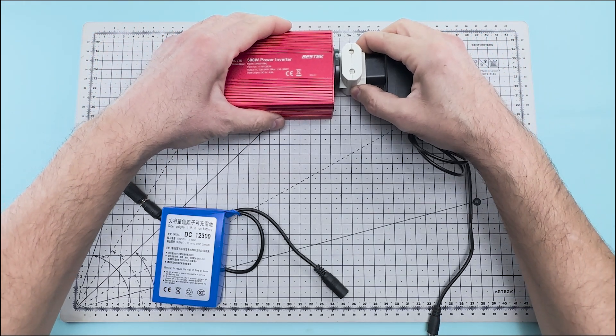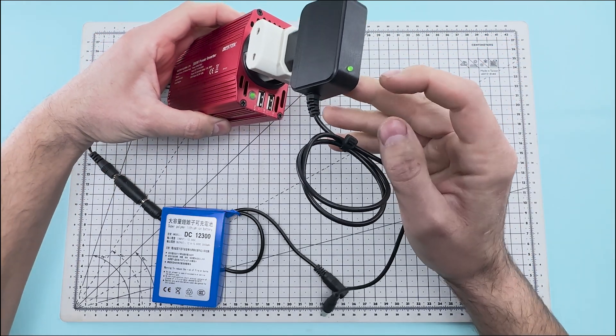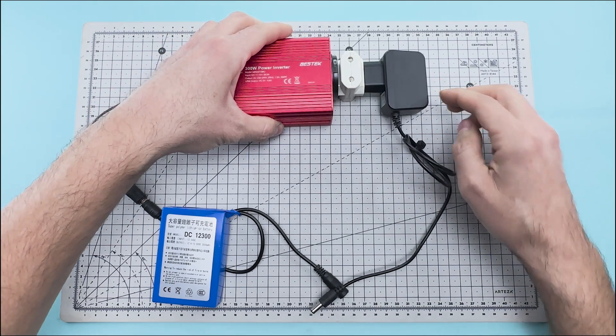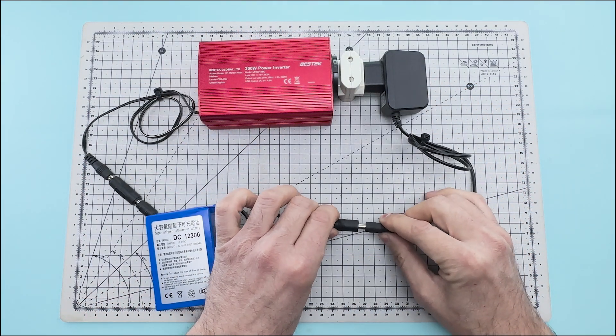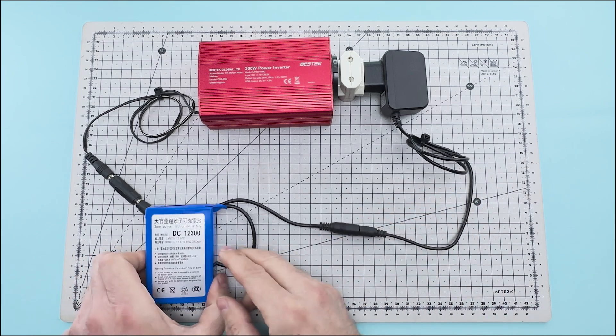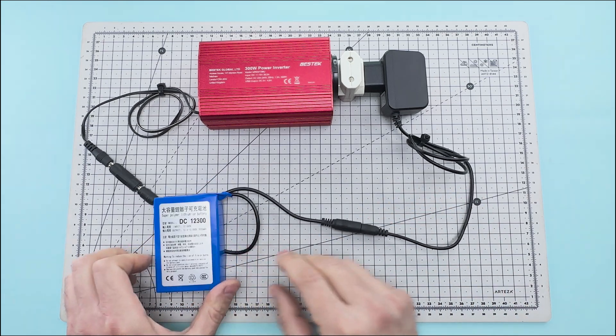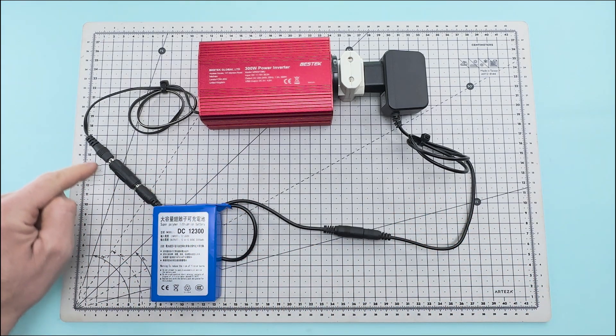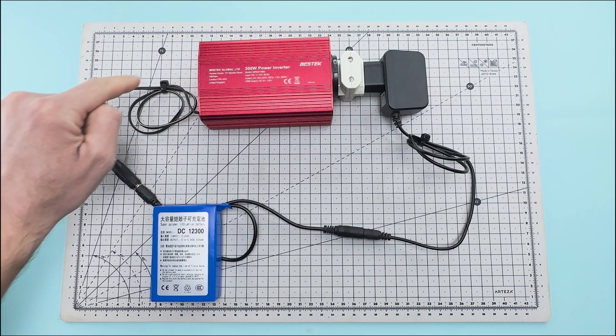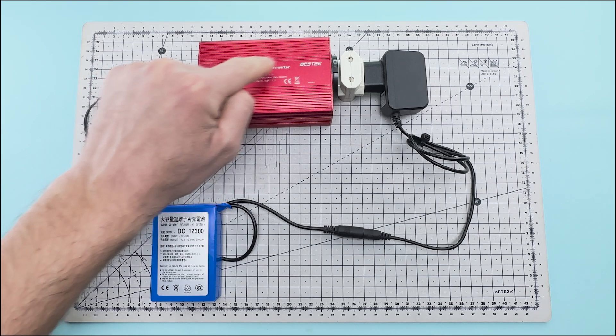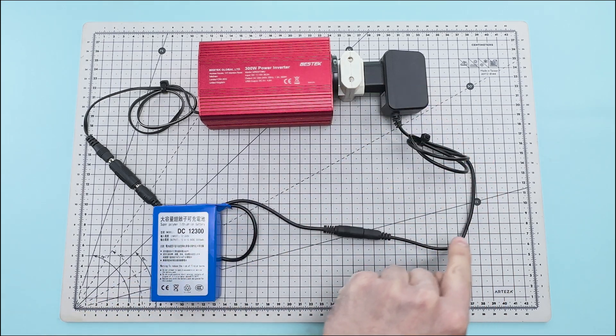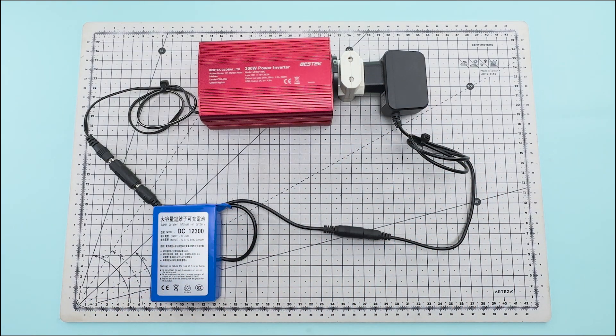Now we connect the battery charger to the power inverter using a multi-plug power strip. And now we plug the charger's connector into the lithium battery. This way, the battery is powering the inverter. The inverter receives the battery's voltage and transforms it into 220 volts of alternating current, and with the transformer we convert it back to 12 volts of direct current to charge the battery.